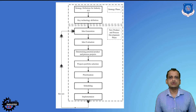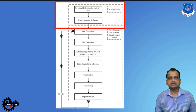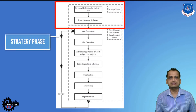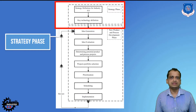Talking about the phases of overall product development — for new product development as well as existing product launches — before the development phases, we have the strategy phase. In the strategy phase, there are two steps: first is the definition of strategy, where we define the strategic measures the company wants to take; and then we define the supporting technologies as part of Industry 4.0 that the company wants to implement within the industry.